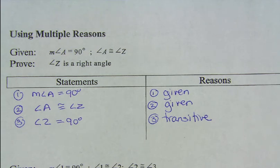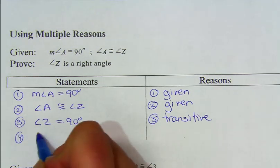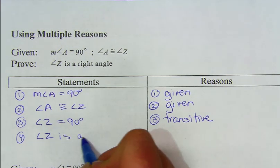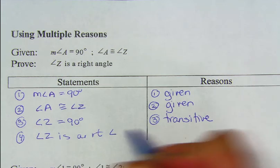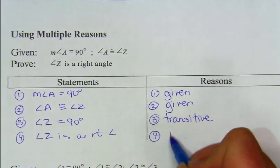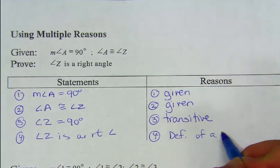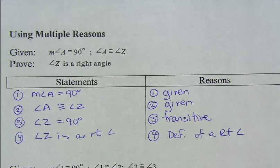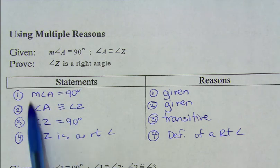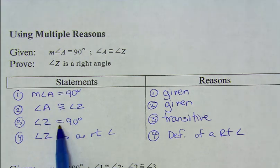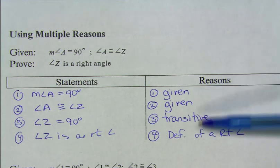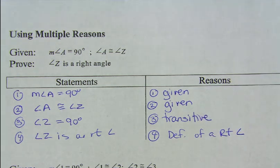If angle Z is 90 degrees, then angle Z is a right angle — that's our definition of a right angle. If an angle is 90 degrees, then it's a right angle. And so we've done it. We started off with the givens, used them as clues, finished off with what we needed to prove, and along the way gave a reason for every single statement. That's your proof.